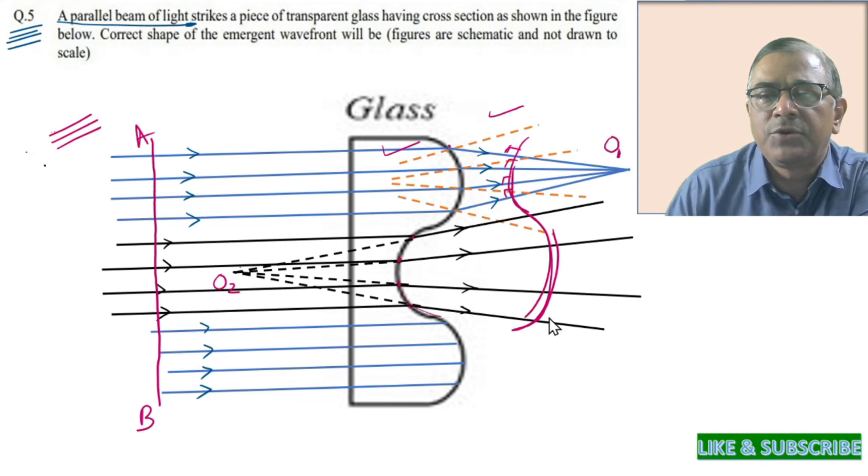Now you can go ahead to make the wavefront of the emergent rays, which come out of this portion of the transparent glass slab. And it should look like this.